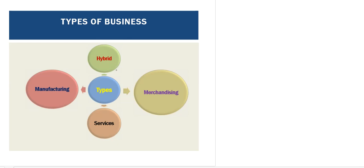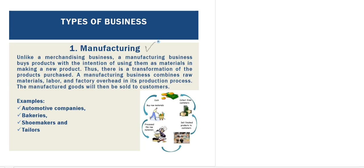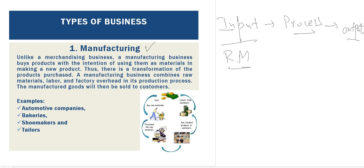Next, types of business. There are many types: merchandising, services, manufacturing, and hybrid. First, manufacturing business. Manufacturing businesses use input, process it, and create output. Input means raw material. Companies use raw material, process it through a manufacturing process, and after making the finished product they offer and deliver the product to customers.